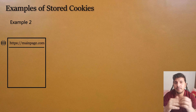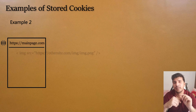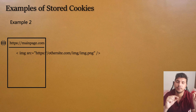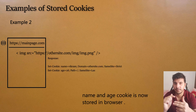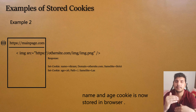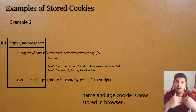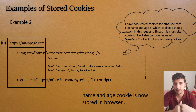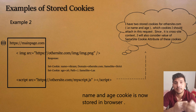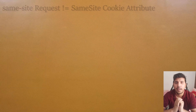Another example: let's say you have never visited othersite.com — you only visited mainpage.com. Within mainpage.com there is a first request being made to othersite.com which sets some cookies. Then in the second request, how is the browser deciding whether it needs to attach those cookies or not? It will consider path, domain, and other cookie attributes, but on top of that it will also consider the SameSite cookie attribute, because now it is a cross-site context.